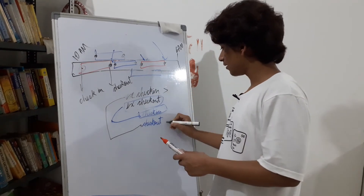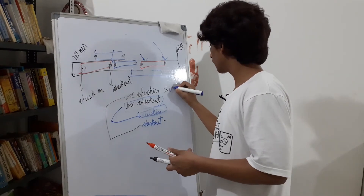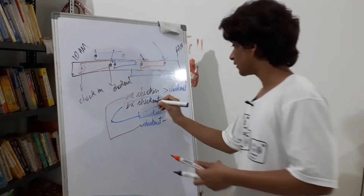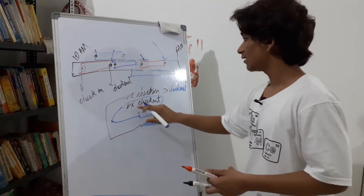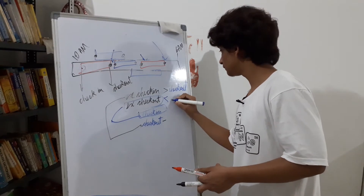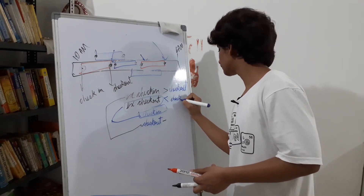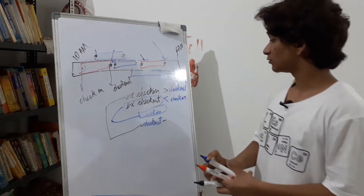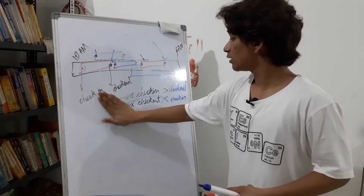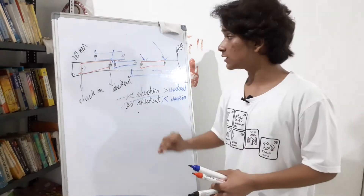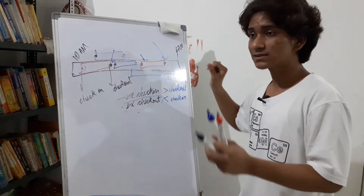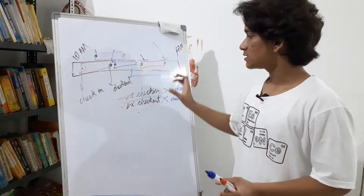So: existing check-in > new check-out, and existing check-out < new check-in. These are the only two conditions you need to keep in mind while checking for the availability of a time slot in a single timeline, so that it doesn't overlap.